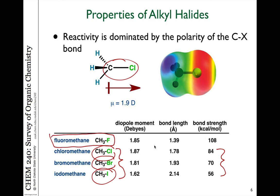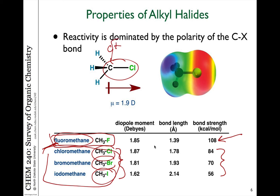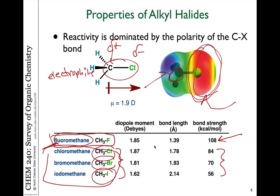Fluorine compounds are a little different — they are actually very stable, with quite high bond strength. Fluorine-containing polymers like Teflon can withstand very high temperatures without breaking down because those bonds are inert. We think of fluoro compounds as being in a slightly different category than alkyl halides when we talk about reactivity. In this chapter, we'll focus on the reactions of chloro, bromo, and iodo compounds. In terms of bond polarity, the carbon end is partially positive and the halogen end is partially negative, making carbon an electrophile in these reactions.